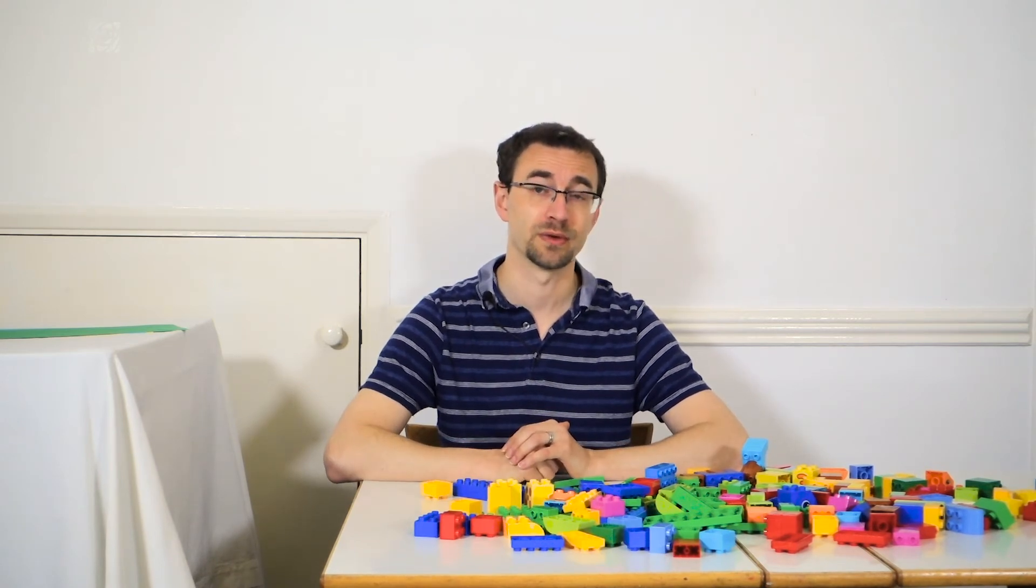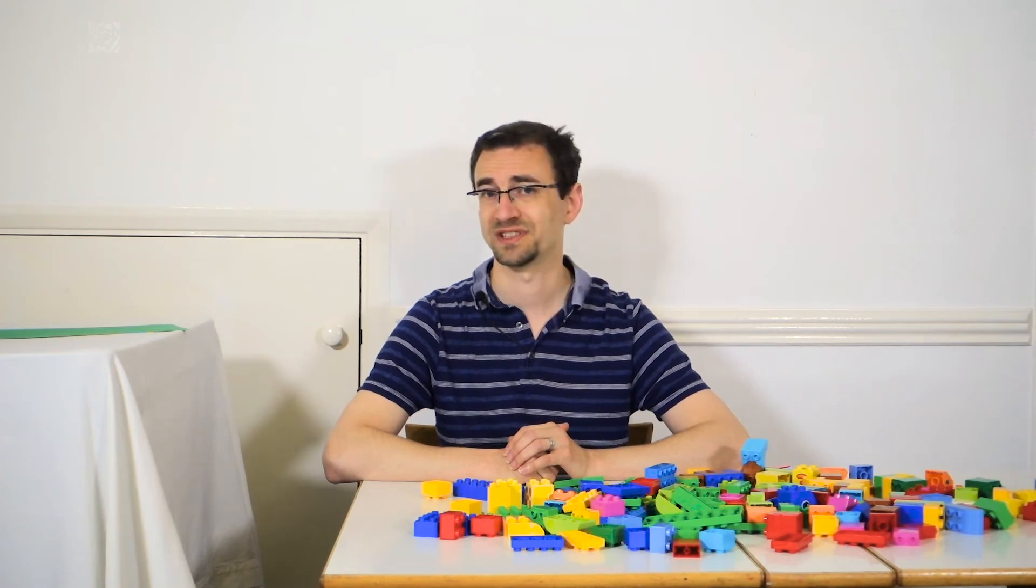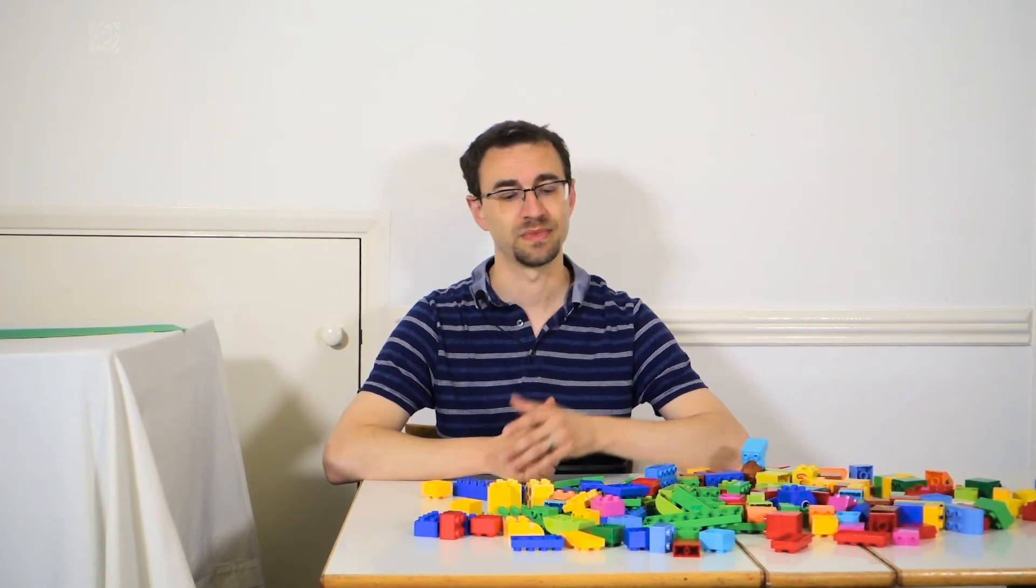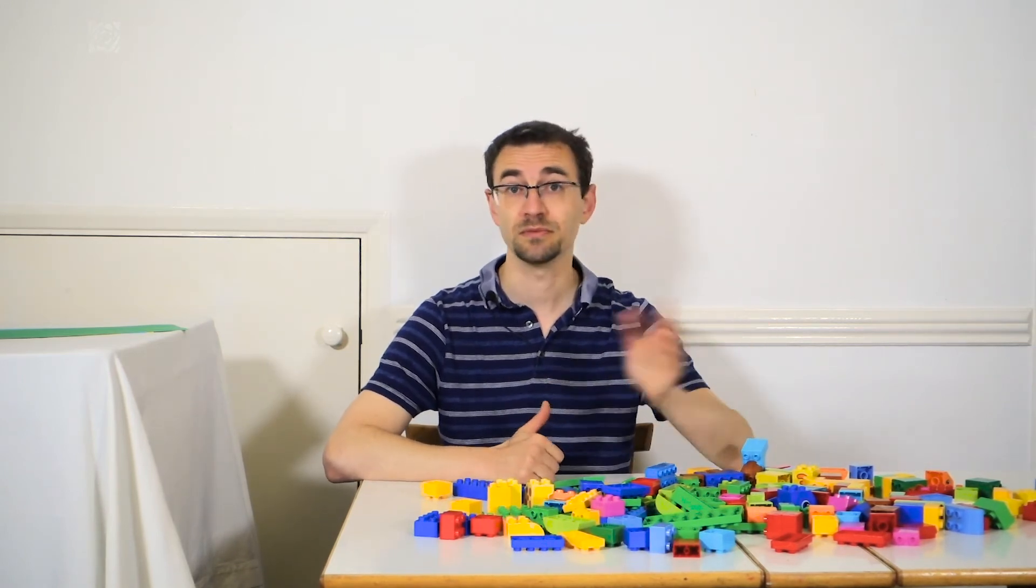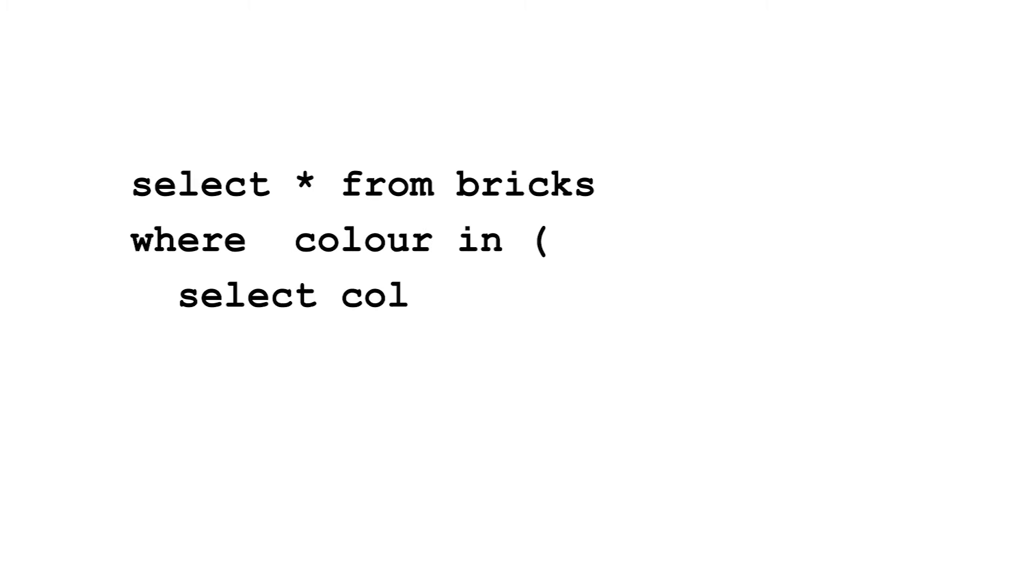Another trap you can fall into here is selecting a column from the wrong table. For example, let's say the colours column in the bricks table is called colour and in the colours table is called colour_name. If you select colour in the subquery, it's not obvious that you're just checking this column equals itself. Which of course is true, giving you all the bricks.